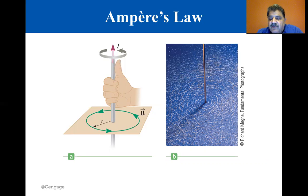Because the filings point in the direction of B, we can conclude that the lines of B form circles about the wire. By symmetry, the magnitude of B is the same everywhere on a circular path centered on the wire and lying in a plane perpendicular to the wire.